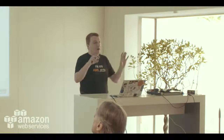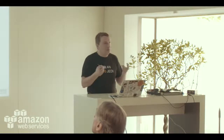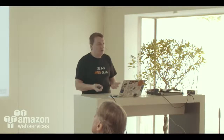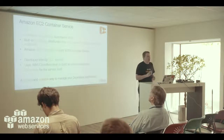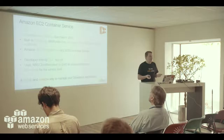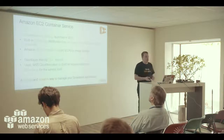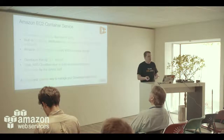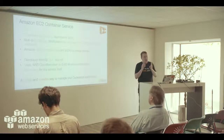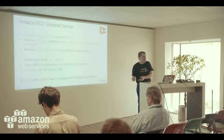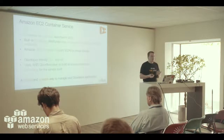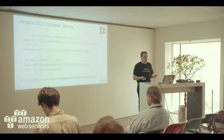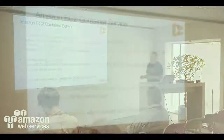ECS manages a cluster of EC2 hosts with Docker installed where you'll start your containers. We also have ECR — a Docker registry hosted in AWS, very secure and highly available — where you can put your Docker images and deploy them close to your infrastructure. You can also use Docker Hub, but unfortunately its availability isn't great and you don't want your deployments stopped because Docker Hub is down, so ECR is a good alternative.